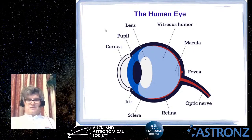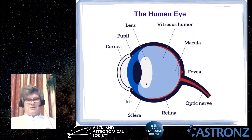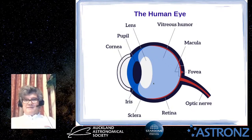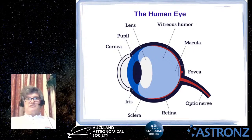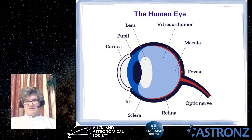There are muscles attached to the lens that can stretch it or let it relax, changing the focal plane. Then at the back of the eye there's another liquid-filled area called the vitreous humor, and then the retina, which is the area where we have light-sensitive cells that allow us to see.